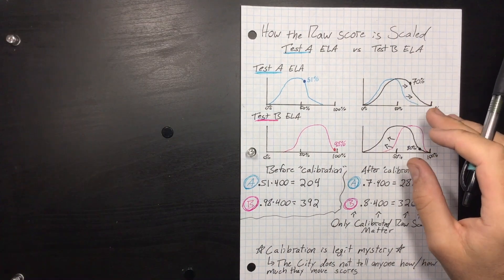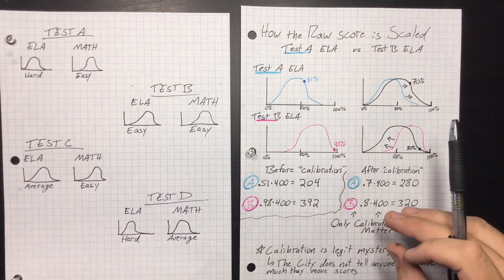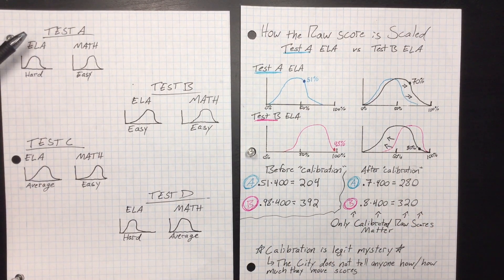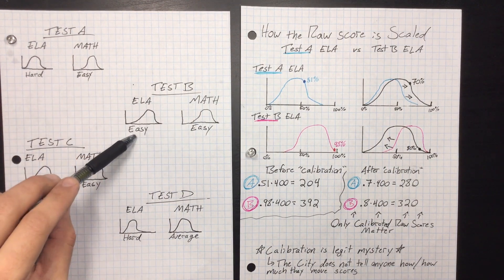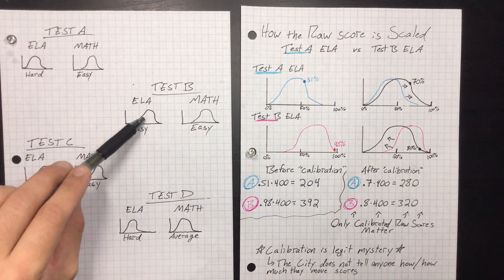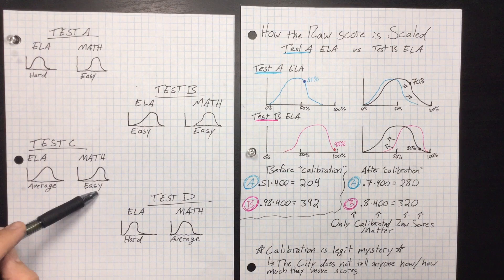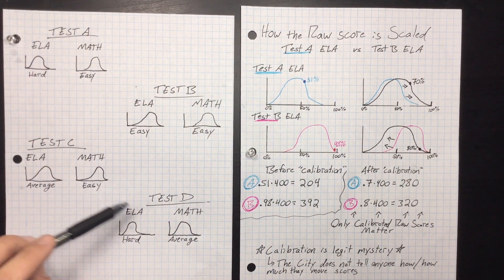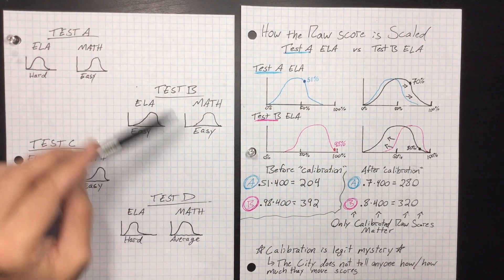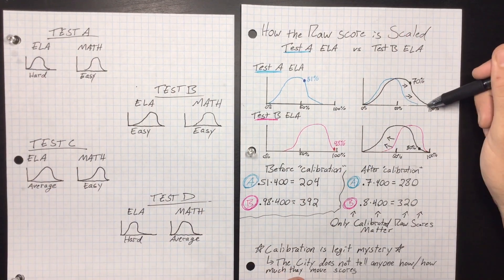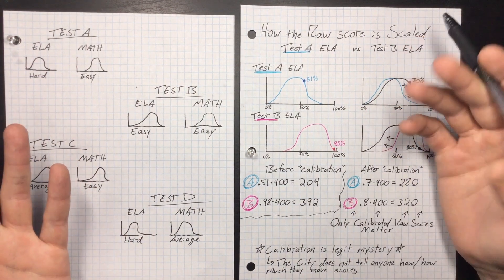And the reason why they do that is this: because they're gonna give like a bunch of different versions of the SHSAT on Saturday and Sunday in October. You might get a test form A where the ELA is hard and the math is easy, and this is what your bell curves look like. And test B, the ELA is super easy and the math is also super easy. So this is what their scores look like. All of the students that took test C - ELA was pretty average and the math was super easy. And then test D, the math is average and the ELA is hard. So how do you compare these four test forms? Well, you have to calibrate them and you have to make them fit the normal curve.